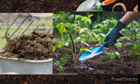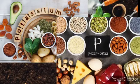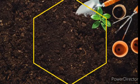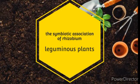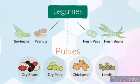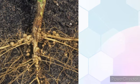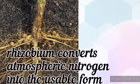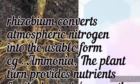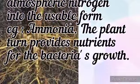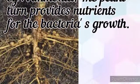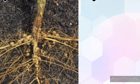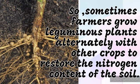There is also a symbiotic association between rhizobium bacteria and leguminous plants. Rhizobium converts atmospheric nitrogen into a usable form, for example ammonia, and the plant in turn provides nutrients for the bacteria's growth. Farmers sometimes grow leguminous plants alternately with other crops to restore the nitrogen content of the soil.